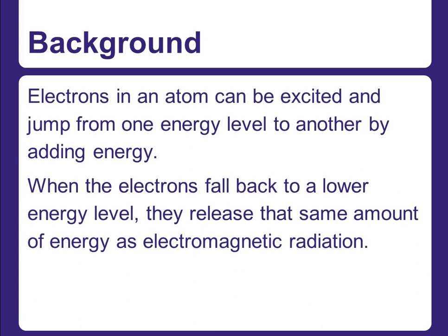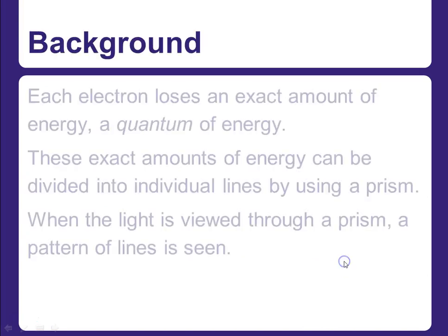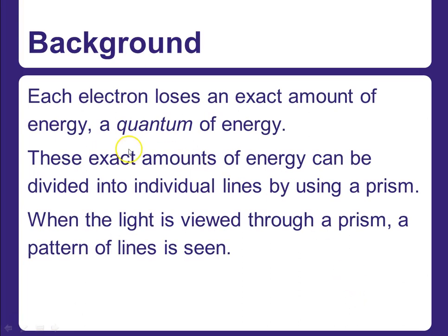Some more background information. Electrons in an atom can be excited and jump from one energy level to another by adding energy to them. You've learned about energy levels — 1s, 2s, 2p, and all of that. Atoms can absorb energy; the electrons get excited and jump up to a different energy level, then eventually fall back down to a lower energy level. When they do that, they release that same amount of energy as electromagnetic radiation — what we see as light. Each electron loses an exact amount of energy known as a quantum of energy, and those exact amounts can be divided into individual lines using a prism. When you see the light viewed through a prism, you see a pattern of lines arranged according to different wavelengths.